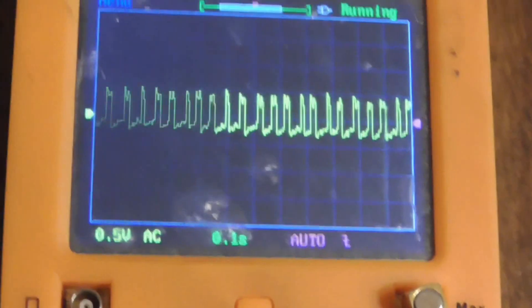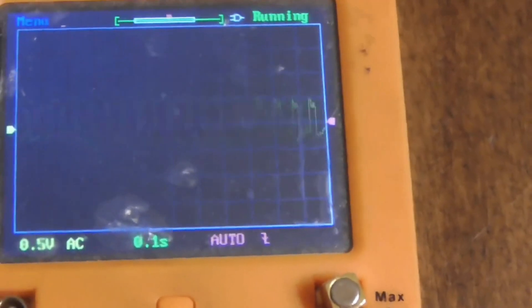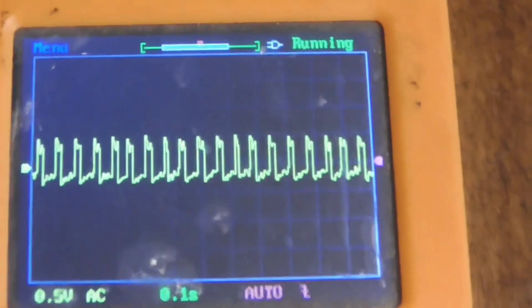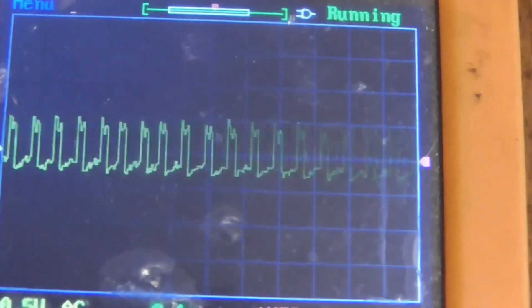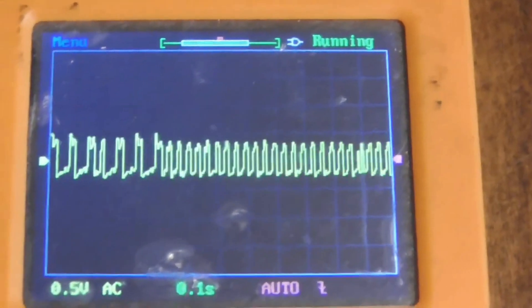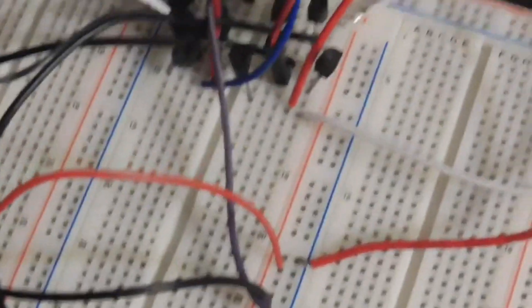I just have my oscilloscope here running on the oscillator side, the 2N2222A that I just showed you, and basically a square wave. Now I'm sure I could change the frequency, but this is very crude because I just have the capacitor here.